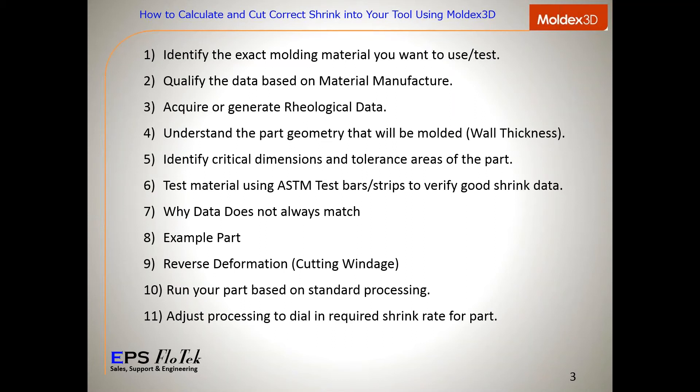We'll also discuss why data sometimes does not always match the analysis or the molded part. We're going to do an example part to show you some specifics. We'll talk about reverse deformation — really the next step in analysis — which involves taking the data that you've run with the analysis to actually create a negative version of that part and possibly even cut the tool from it, running your part based on standard processing and adjusting processing to dial in the required shrink rate.